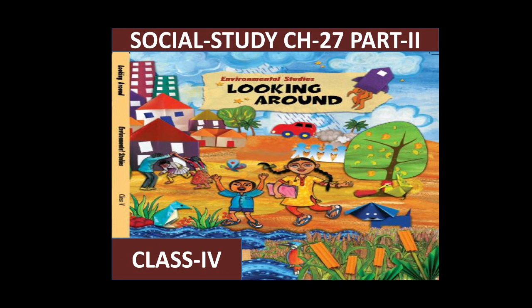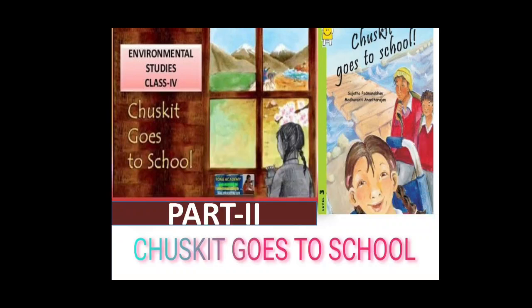Hello everyone, once again welcome to social study class. This is a book of environmental studies, Looking Around, Grade 4. So let's begin Chapter 27, Part 2. The name of this chapter is Chuskit Goes to School.